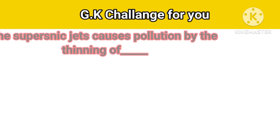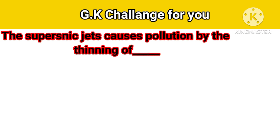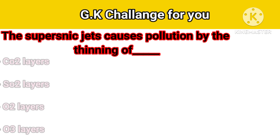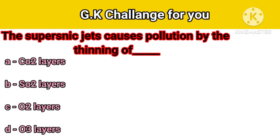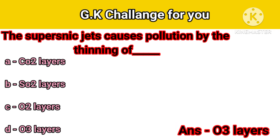Now the last question: Supersonic jets cause pollution by the thinning of — Option A: CO₂ layers, B: SO₂ layers, C: O₂ layers, D: O₃ layers. Your right answer is O₃ layers.